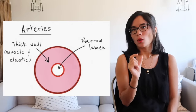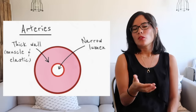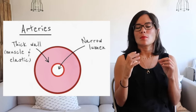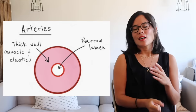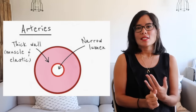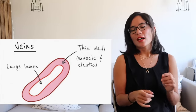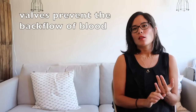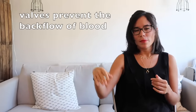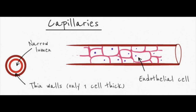Structure of blood vessels: arteries have a narrow lumen so blood is forced through at high pressure — therefore they have thick muscle and elastic fibre walls. Veins have a wider lumen, lower pressure, thinner walls, and contain valves to prevent backflow of blood. Capillaries are one cell thick, enabling a very short diffusion distance, with an extremely narrow lumen — they supply all cells with oxygen.